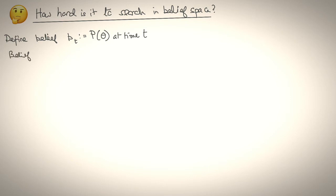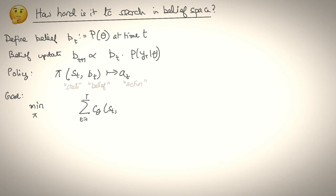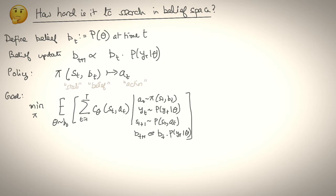Let's think about the question, how hard is it to search the space of beliefs to find the optimal sequence of actions? What do we mean by belief? Define belief B_t to be the probability over theta at time t. As we discussed, this belief is updated by Bayes' rule where the new belief is the old belief times the observation model and then normalized after that. Now, the robot policy pi is both a function of the state and the belief and maps this to an action.